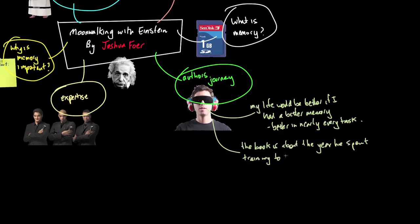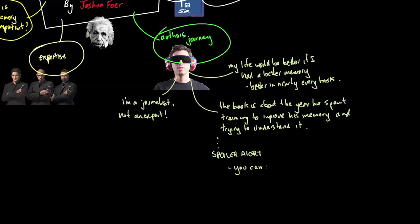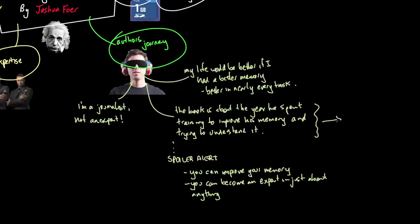It's the year he spent trying to improve his memory and the things he learnt along the way about how memory works and some of the things that we do well and some of the things we don't do so well and how to use techniques to improve his memory. One point that's important to mention, he's a journalist. He's not an expert or a PhD student. You get a great little view of a perspective from a journalist as opposed to an expert in the field. Spoiler alert, he ultimately learnt that you can improve your memory and you can become an expert in nearly any field if you apply certain principles.